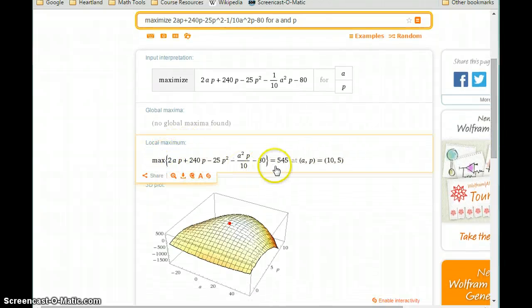So in this case, we get a local maximum when A is 10, P is 5, and that maximized function value is 545.